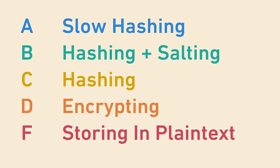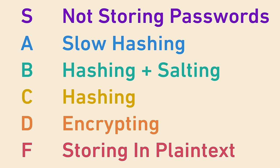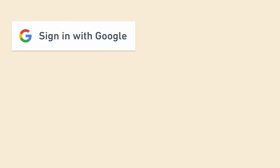Is there an even higher tier — S tier? It's kind of a trick answer, but there is: S-tier is not storing passwords at all. Storing passwords is quite tricky, so consider ways to avoid doing it entirely. For example, you can use other authentication services like Sign in with Google or Sign in with Facebook, so that users can log into your product using an established authentication platform. Not only is it more convenient for users, you get to sleep better at night knowing that your system doesn't have any passwords in it at all.